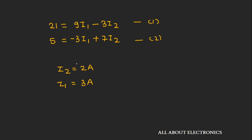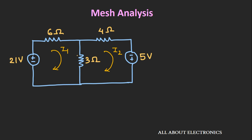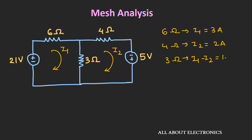You can pause the video and try to solve these two equations by yourself. We found the mesh currents as I1 = 3A and I2 = 2A. The current through the 6Ω resistor is mesh current I1 = 3A. The current through the 4Ω resistor is mesh current I2 = 2A. And the current through the 3Ω resistor is I1 − I2 = 1A. This is how mesh analysis finds currents through all resistors.